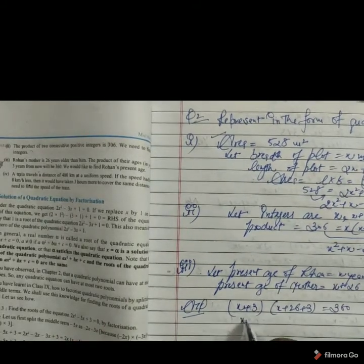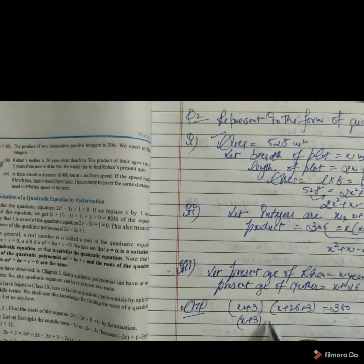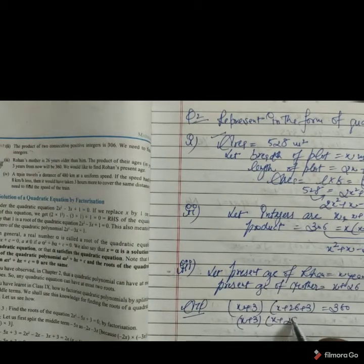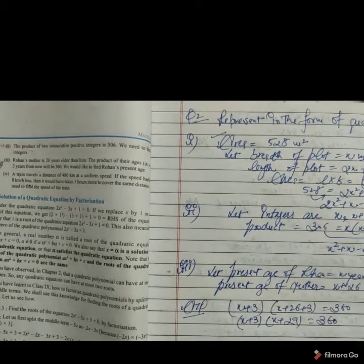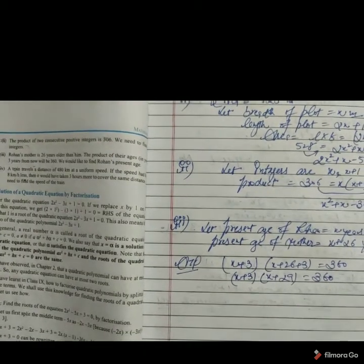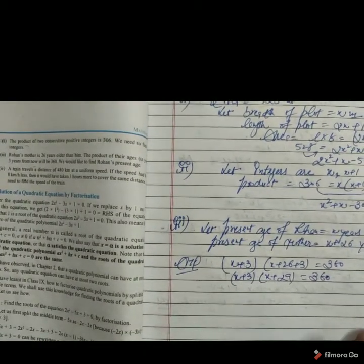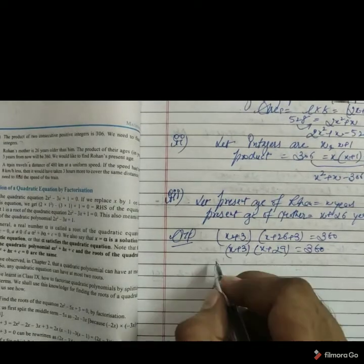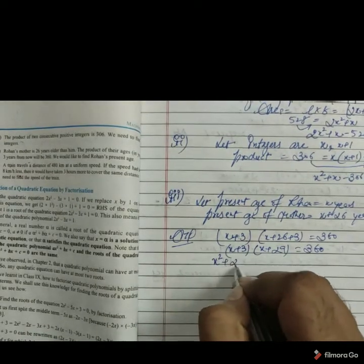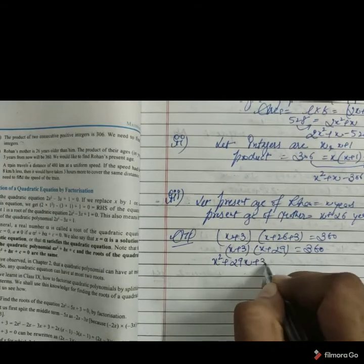If we see here it is x plus 3. Second bracket gives us x plus 29 is equal to 360. On the left hand side we are having binomial multiply with binomial. So first of all x multiply with x plus 29. We get x square plus 29x. Plus 3x plus 87.